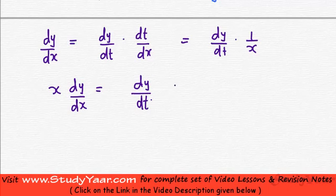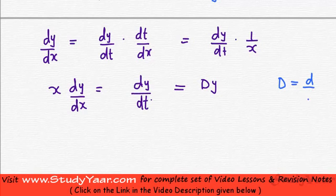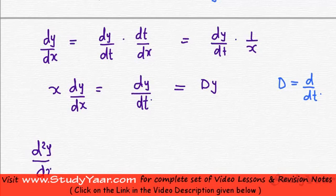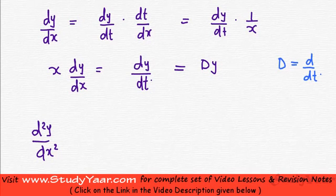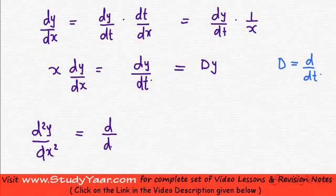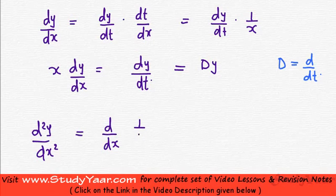This we are going to write as Dy, where capital D is the operator dy by dt. So x dy by dx equals Dy — capital D is your operator d/dt. Similarly, what is going to be d squared y upon dx squared? You've already calculated dy by dx, which comes out to be 1 upon x times dy by dt. So essentially d squared y upon dx squared is equal to d/dx of (1/x · dy/dt).